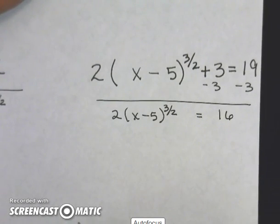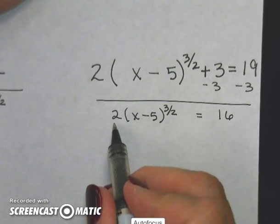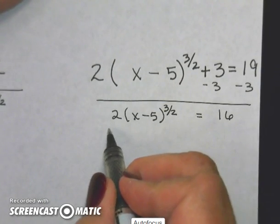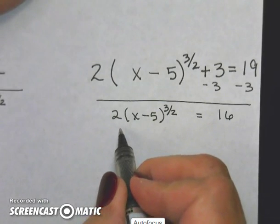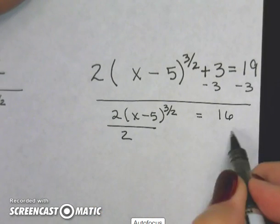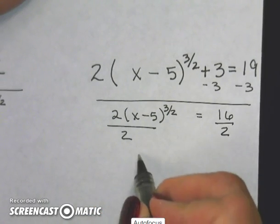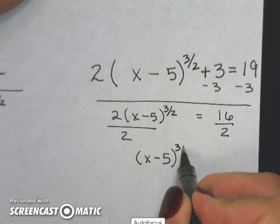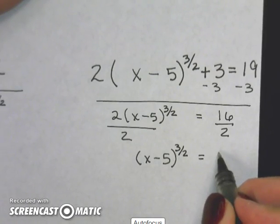Now I need to get rid of my 2. This is 2 times that parenthesis, so the inverse operation for multiply is divide. So x minus 5 to the 3 halves power is equal to 8.